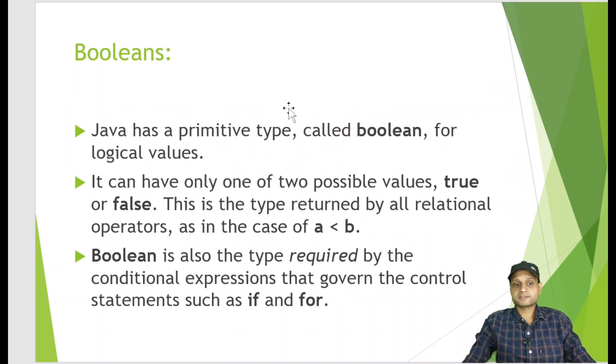Now the next one is booleans. Boolean means either a value is true or false. Either a statement is true or false. Java has a primitive type called boolean for logical values. It can have only two possible values, that is true or false. This is the type returned by all relational operators.